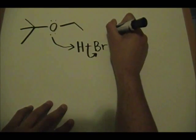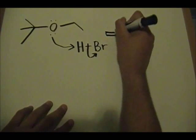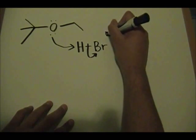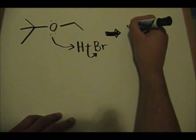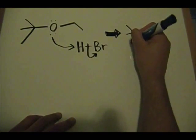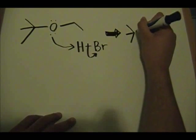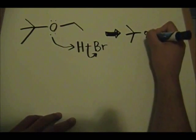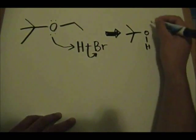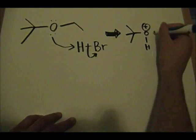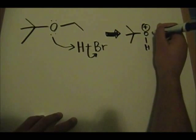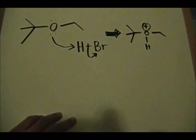The result of this step is this. You have a hydrogen now on your ether with a positive charge on the oxygen and you still have this little piece hanging off.